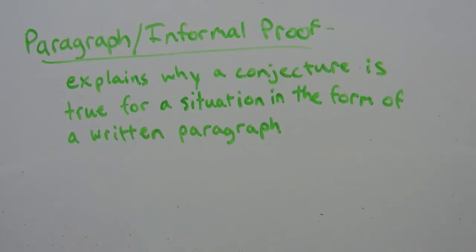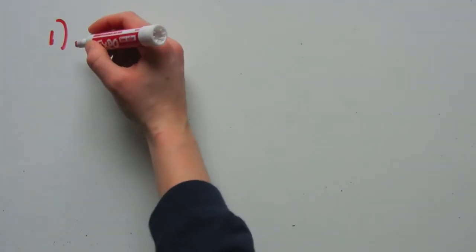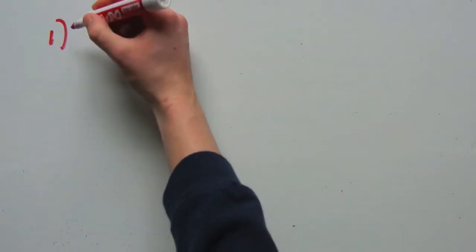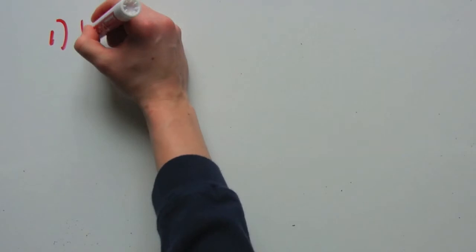Here are five simple tips to help you formulate a proof. Step one: most books will say to state the theorem or conjecture that is to be proven — that's usually given to you — but more importantly, you need to understand that theorem or conjecture.